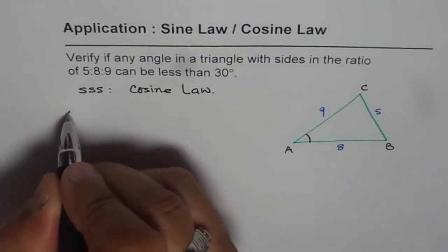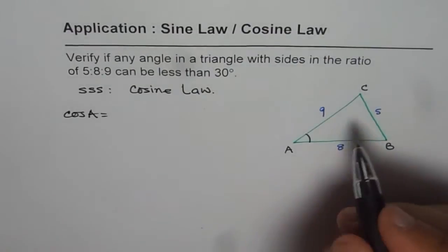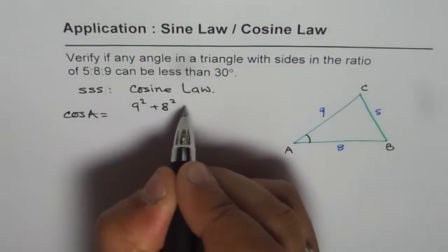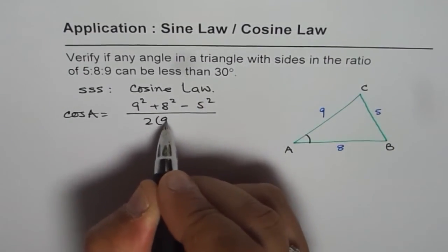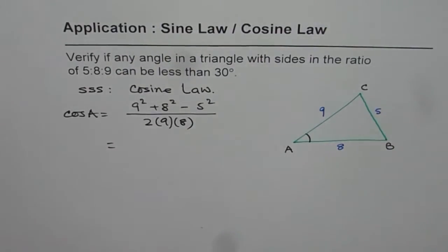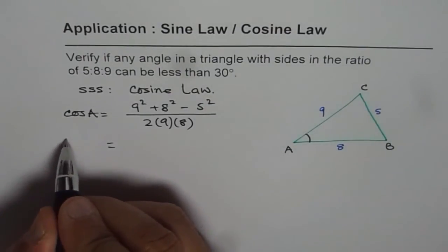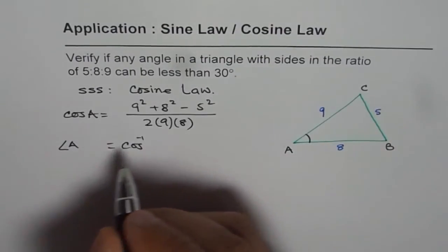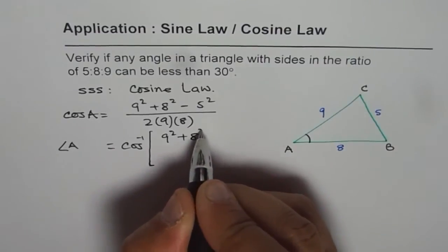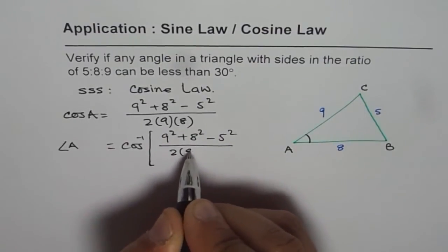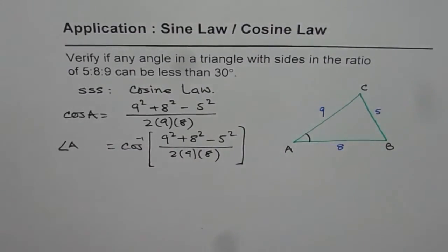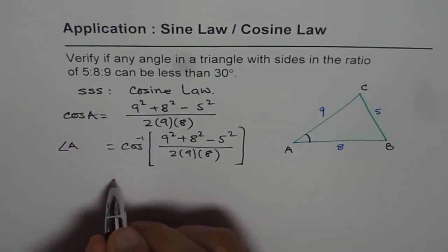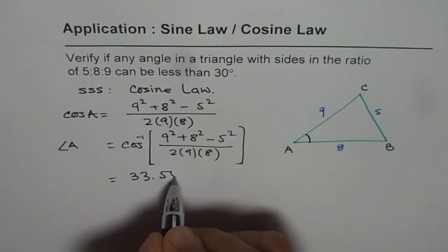Now we know what cos A is. Rearranging the formula, cos A equals 9 squared plus 8 squared minus 5 squared, divided by 2 times 9 times 8. So angle A equals cos inverse of that expression. Let's use the calculator: second function cos inverse, open bracket, 9 squared plus 8 squared minus 5 squared, close bracket, divided by open bracket 2 times 9 times 8, close bracket. That equals 33.55 degrees.